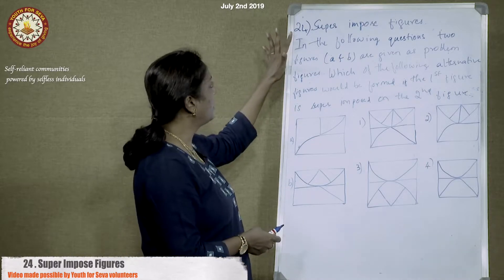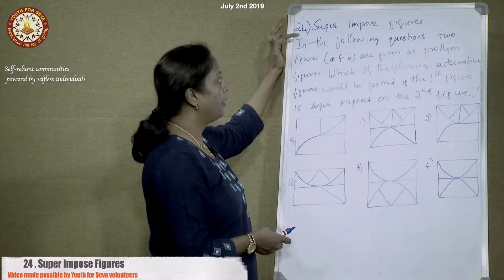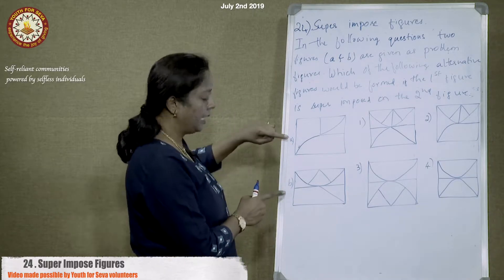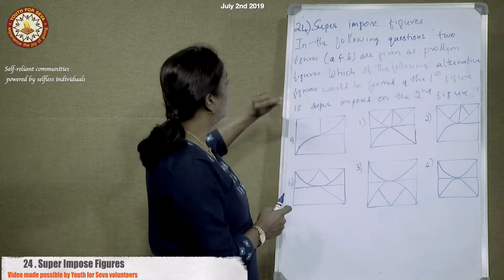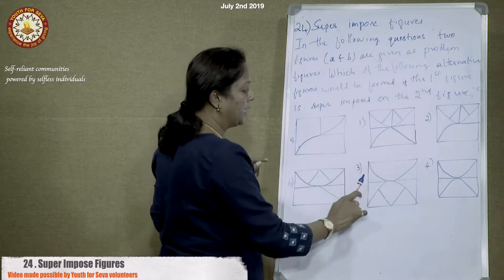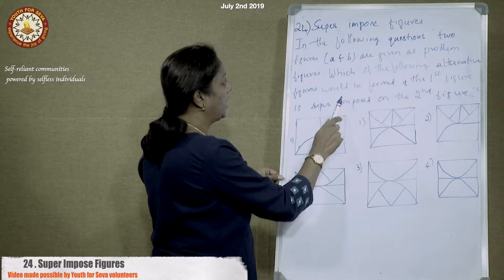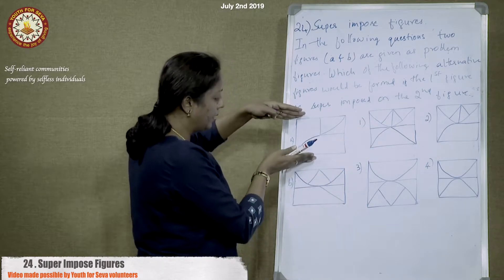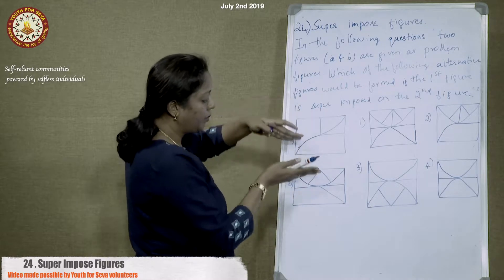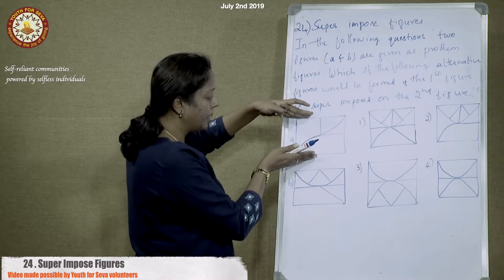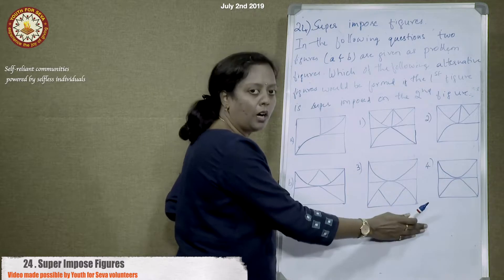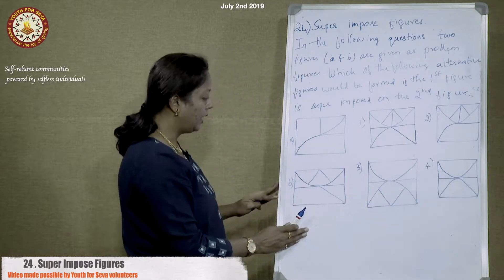In nonverbal reasoning, superimposed figures questions give two problem figures — A and B. We need to determine which of the four alternative figures is formed when the first figure is superimposed on the second, meaning one figure is placed on top of the other and we trace the resulting combined image.